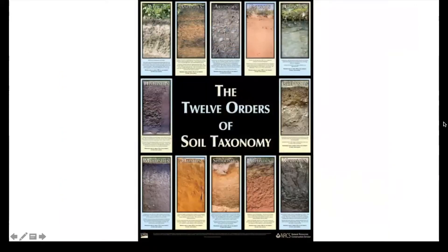Now I'm going to briefly explain the 12 orders of soil taxonomy. These 12 orders are based on one or two dominant physical, chemical, or biological properties that clearly determine one from another. I'll be providing a handout as well, just so you guys can keep it with you. Some main facts for each of them, but we are going to go over each of them separately.